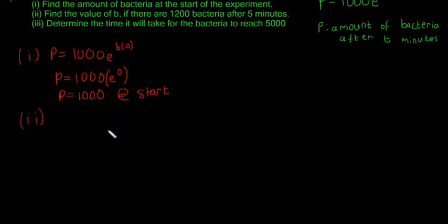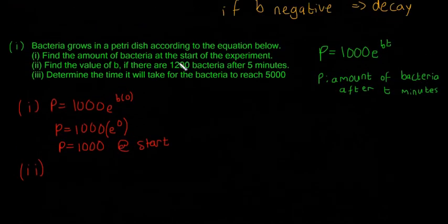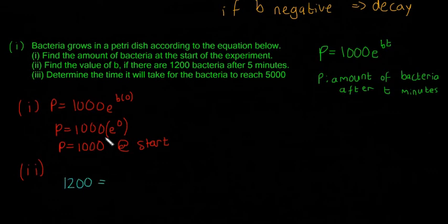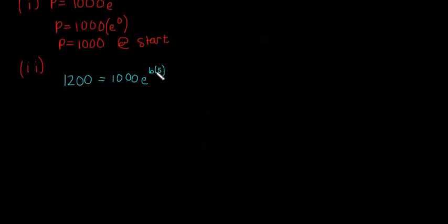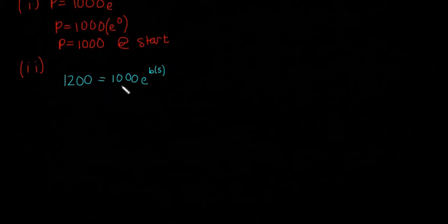Okay, so this is the question you get asked the most. So 1200 bacteria, that's the amount of bacteria after 10 minutes. So it's going to be 1200 is P. And that's equal to this here. So 1000 E to the B and it's multiplied by 5. So it says after 5 minutes, so T is equal to 5. So this is what you're going to have to do. You're going to have to use logs to get this B down. But you can't do that straight away. So first you have to basically get rid of this number here before the E. So I'm going to divide both sides by 1000.